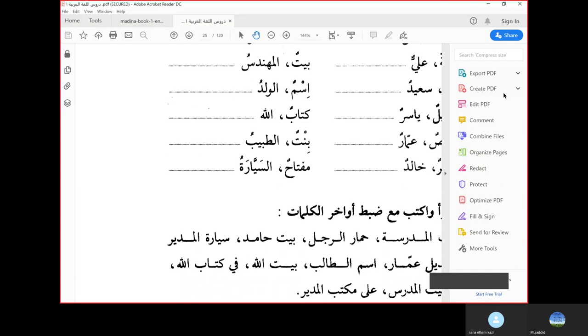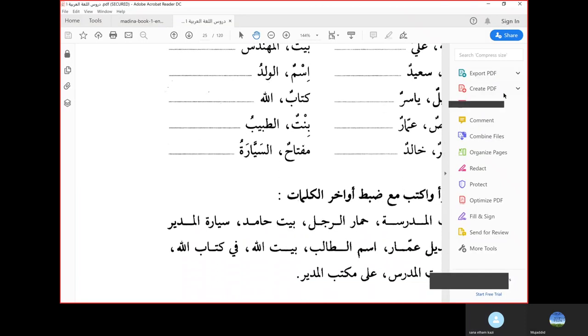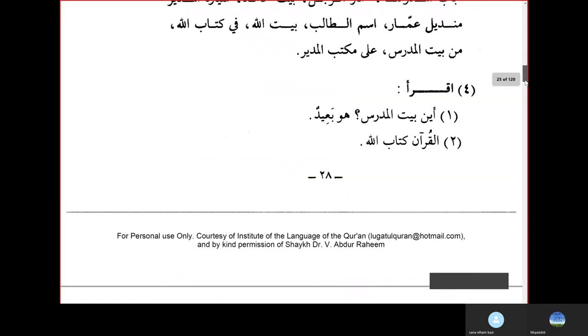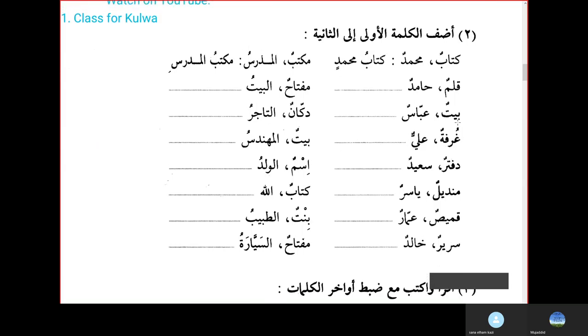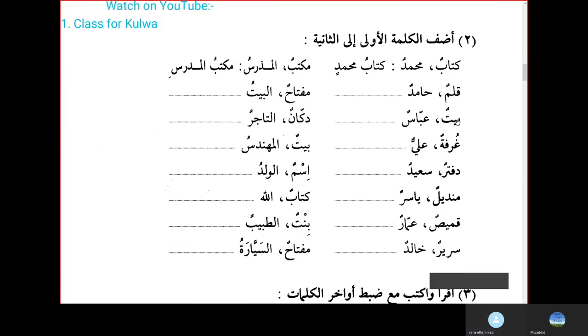Page number 28 from the book. Add the first word to the second one. Kitabun, Muhammadun — so Kitabun is 'book' and Muhammad is the name. If you add both, it'll be Kitabu Muhammadin — Muhammad's book.